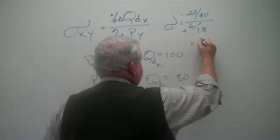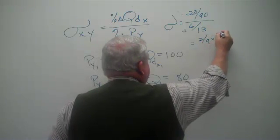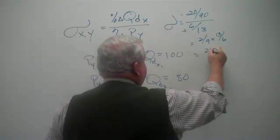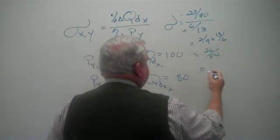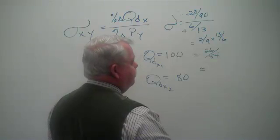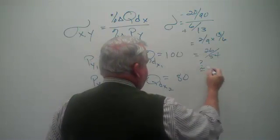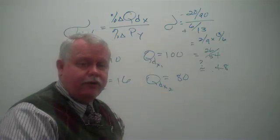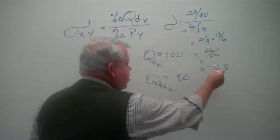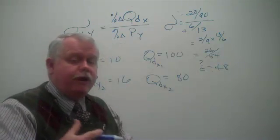This is 2 ninths times 13 over 6, which is 26 over 54, which is something just a little bit less than 0.50. I'm going to guess this is about 0.48. The math we can all do with a calculator. But remember this has got a negative coefficient in front of it or a negative sign. This is important.